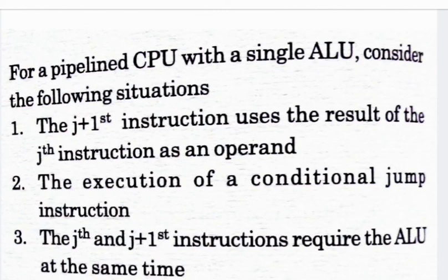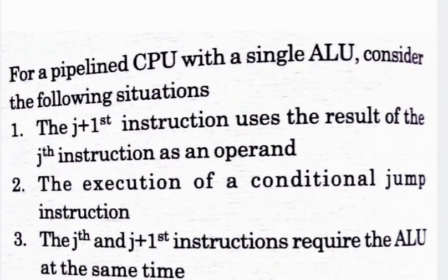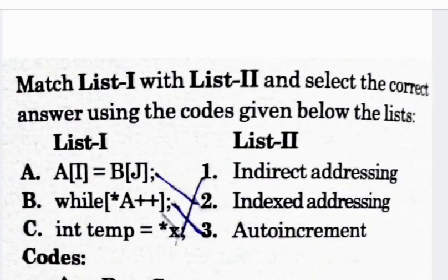Next question: for a pipelined CPU with a single ALU, consider: situation 1 — the j+1 instruction uses the result of the jth instruction as an operand; situation 2 — execution of a conditional jump instruction; situation 3 — the jth and j+1 instructions require the ALU at the same time. Which of these can cause a hazard? All three situations cause hazards, so option D — all of the above — is your correct answer.